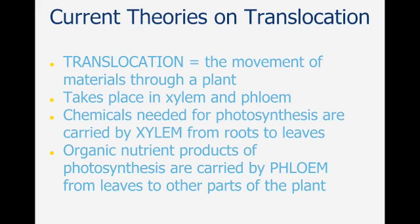Now, some current theories on translocation. Translocation is the movement of materials through a plant — this can be either through the xylem or the phloem, so it's not specifically looking at a particular type of substance. Chemicals needed for photosynthesis are carried by the xylem from the roots to the leaves. We know that photosynthesis requires water and oxygen, so water is brought up through the xylem from the roots and oxygen is taken in through the leaves. Organic nutrients produced as a result of photosynthesis are then carried by the phloem from the leaves to other parts of the plant.